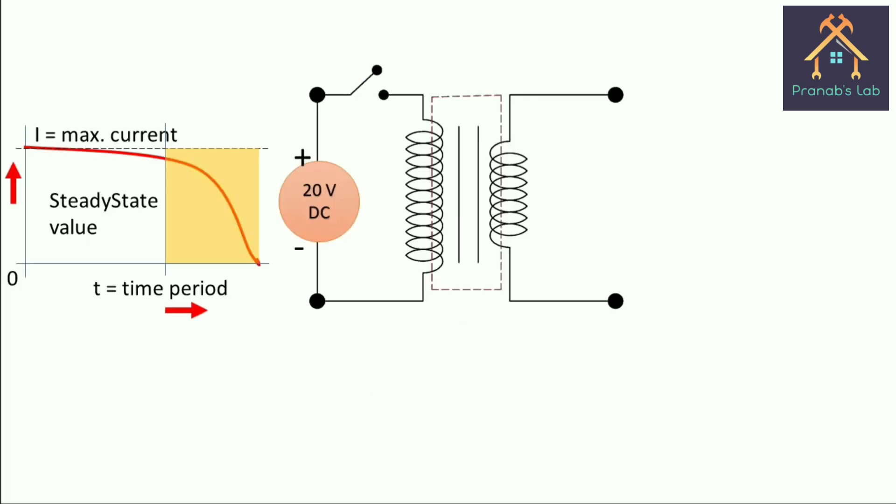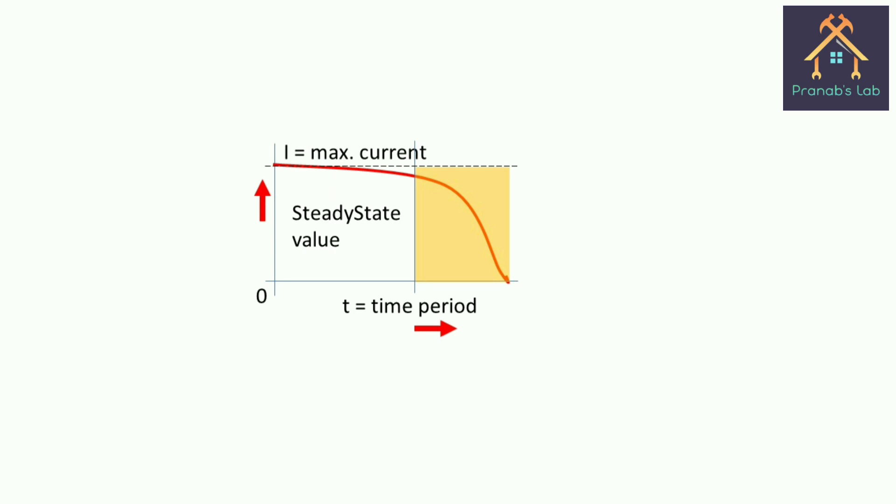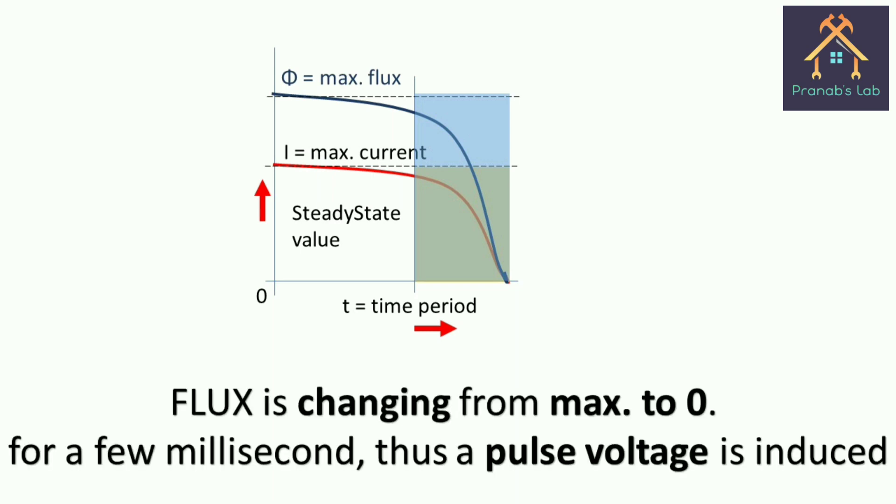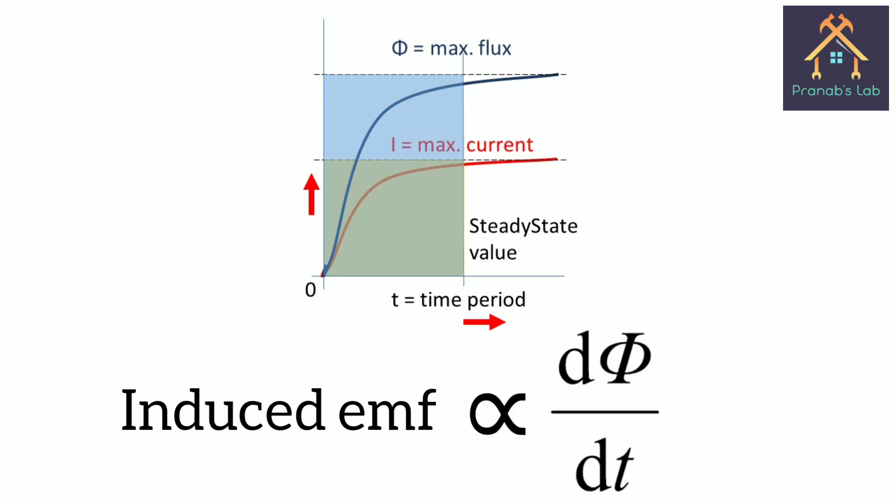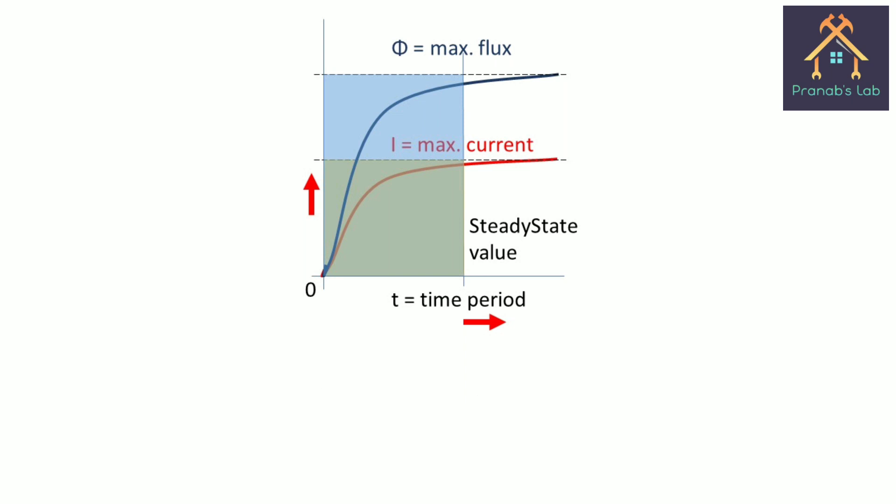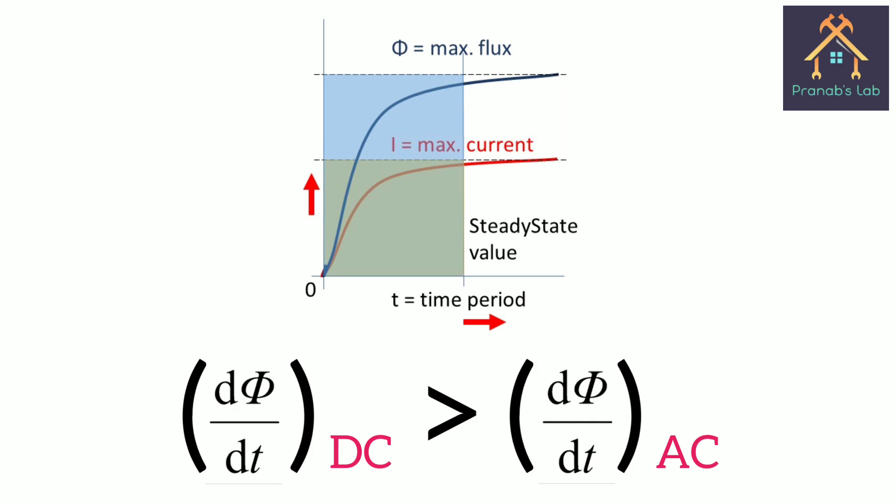Now when the switch is opened, then also the current takes a few milliseconds to reach its value to 0. Then also the changing flux is created, and this changing flux is responsible for inducing an EMF. The amount of induced EMF is directly proportional to the rate of change of flux with respect to time. While using DC supply, when we switch on and off, then the produced rate of change of flux is more than AC supply. So more voltage is induced in DC.